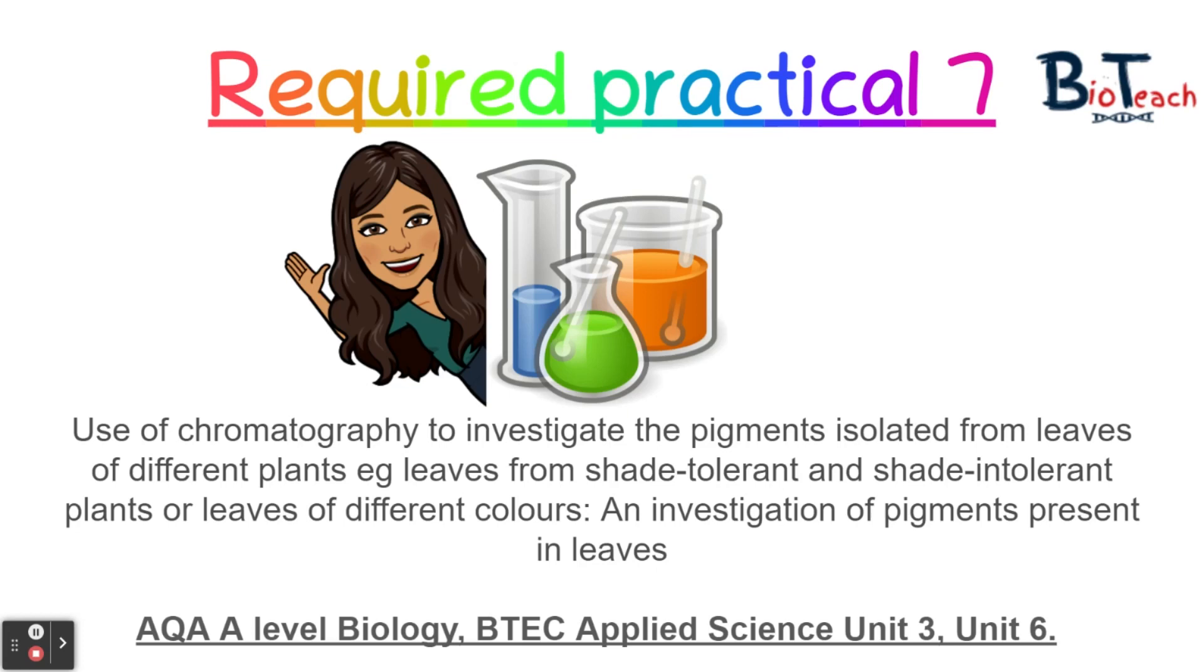Required practical 7 is all about using chromatographic techniques to investigate pigments in leaves. We usually use spinach leaves for this. You may be asked to look at red leaves from salad bags, green leaves like spinach, leaves from plants that are tolerant to the shade, and leaves from plants that are shade intolerant.